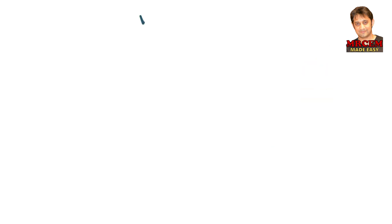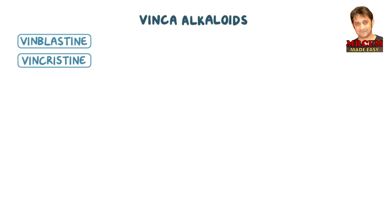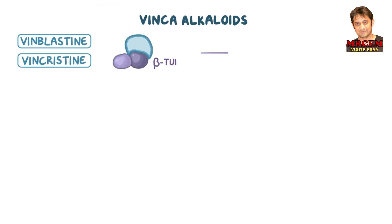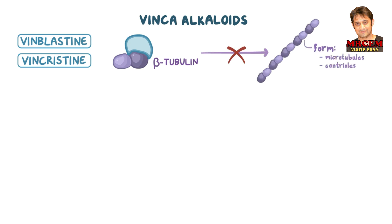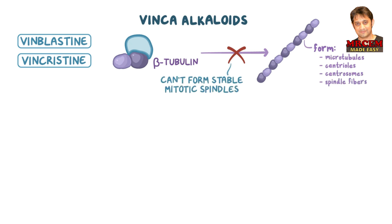Vinca alkaloids include vinblastine and vincristine. Vinca alkaloids bind to beta-tubulin and block its polymerization into protofilaments, which form microtubules, centrioles, centrosomes, and spindle fibers. This means the cell can't form stable mitotic spindles and will stop at metaphase. So vinca alkaloids act in the M phase of the cell cycle and are cell cycle specific.